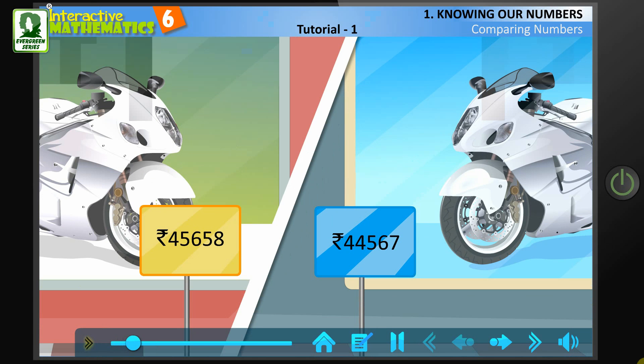Mayank needs to select the showroom that is selling the bike at a lower price. To make a decision, he compares the price of the motorbikes at the two showrooms.